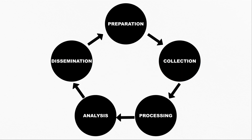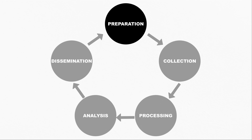Here we have a sample intelligence cycle. Depending on your agency or company, you may have an intel cycle that slightly varies from this one. I've seen intel cycles with as few as four sections, as well as some with as many as seven. The first step of the cycle at the top is what we have listed as the preparation phase, though you may also see it commonly labeled as planning and direction. Here is where you will receive your requirements and build your plan on how exactly you will meet those requirements.